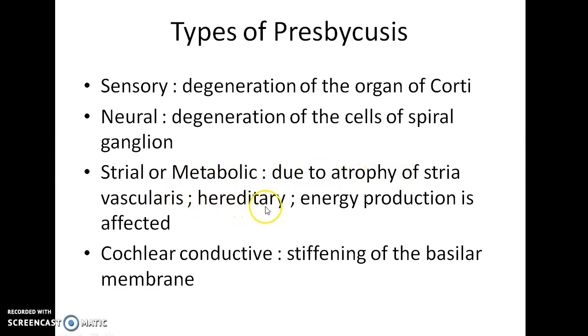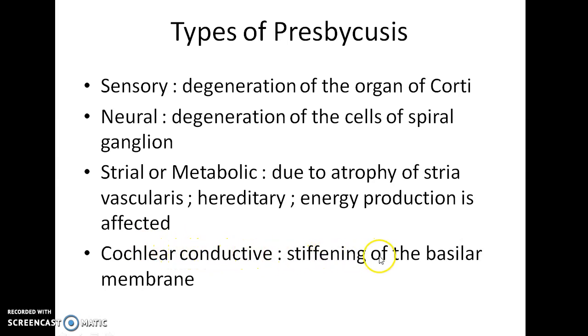Strial presbyacusis is hereditary — that is, it runs in families. In this type, the energy production in the ear is affected. Cochlear conductive presbyacusis is caused due to the stiffening of the basilar membrane.